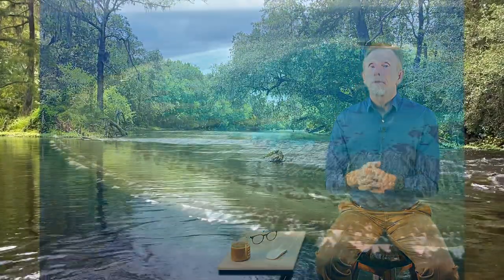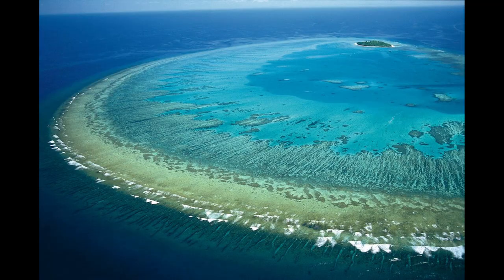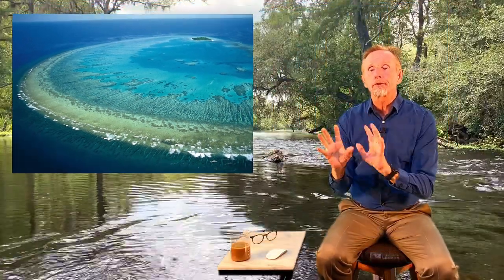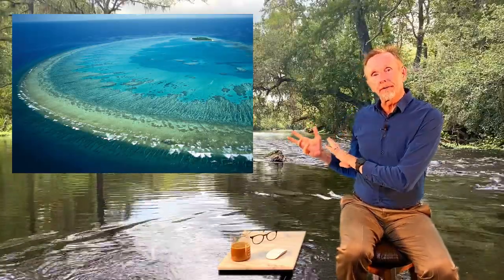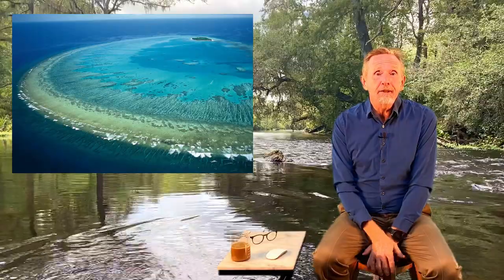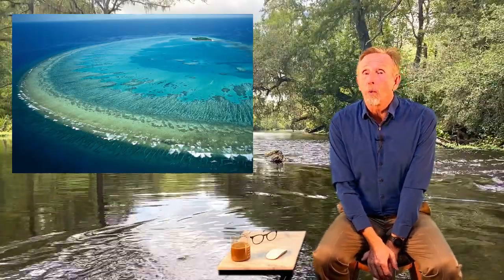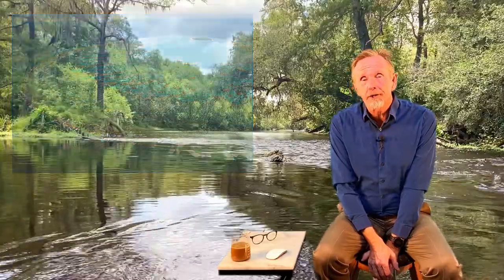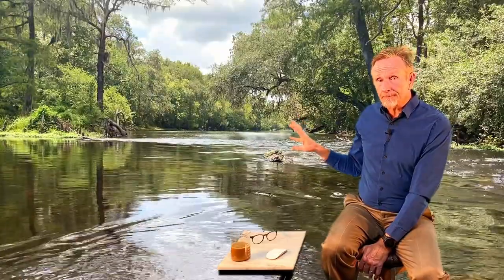Coral reefs provide very important ecological and economic services. They act as a natural barrier protecting the coastline — storm wave energy gets disrupted by the reef before reaching inland. They also provide habitat, food, and spawning grounds for up to one-fourth to one-third of all ocean organisms. Something might live in the deep ocean but come in to spawn in the coral reef area, beginning life there until large enough to venture out.